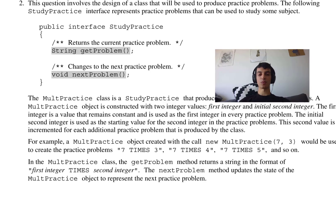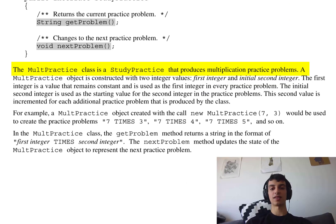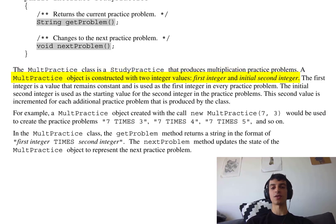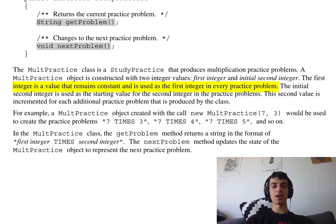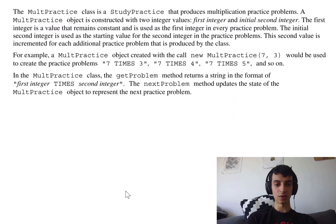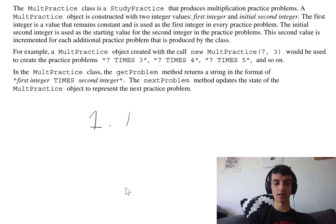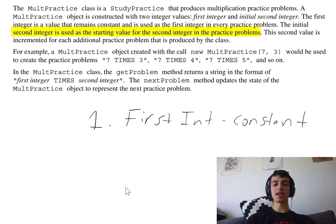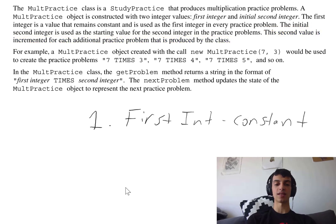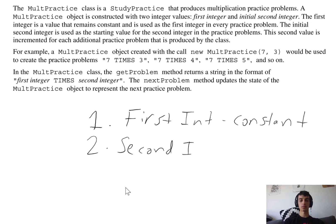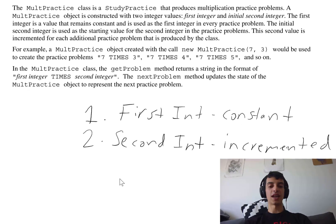It then goes on to describe MultPractice. The MultPractice class is a study practice that produces multiplication practice problems. A MultPractice object is constructed with two integer values: a first integer and an initial second integer. The first integer is constant and used as the first integer in every practice problem. The initial second integer is the starting point and is incremented for each additional practice problem produced.